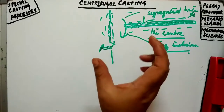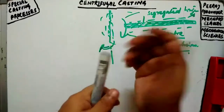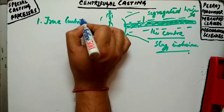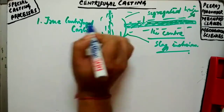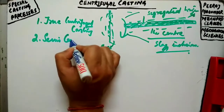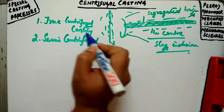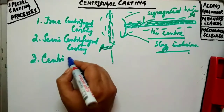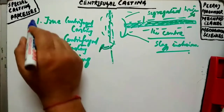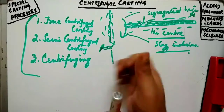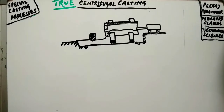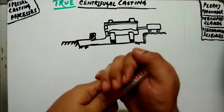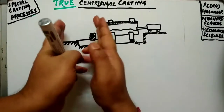There are mainly three commonly known types of centrifugal casting. First is true centrifugal casting, next is semi-centrifugal casting, and the last one is centrifuging. We can use either vertical or horizontal axis. We are going to discuss all three types today.